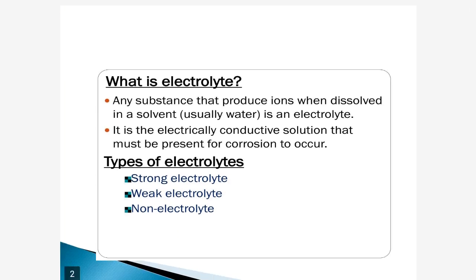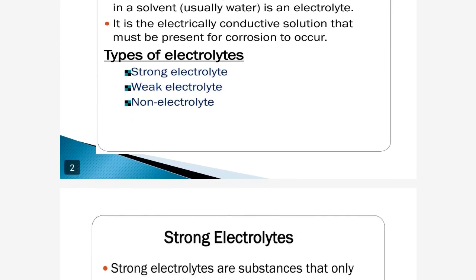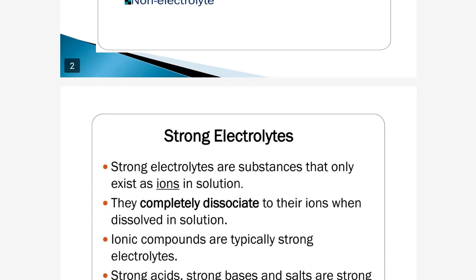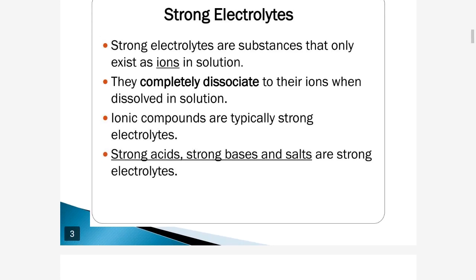Now, types of electrolytes. Electrolytes have three types: strong electrolyte, weak electrolyte, and non-electrolyte. Strong electrolytes are substances that only exist as ions in a solution. They completely dissociate into their ions when dissolved in a solution. Ionic compounds are typically strong electrolytes. Strong acids, strong bases, and salts are strong electrolytes.